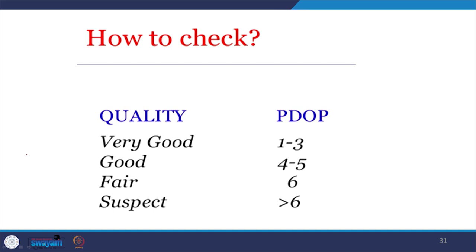When checking observations, PDOP should be very good if it is 1 to 3, good will be 4 to 5, fair will be 6, and suspect will be greater than 6. PDOP should be between 1 to 3 for better quality data.